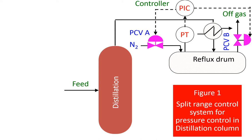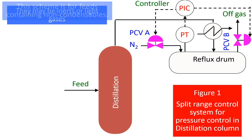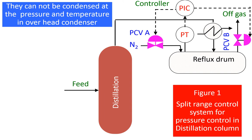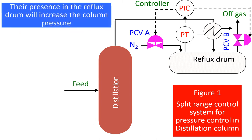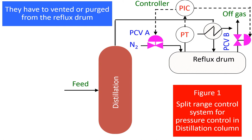The working principle of a split range control scheme in a distillation column is illustrated in this figure. In many instances, the feed to a distillation column consists of light gases which are essentially non-condensables at the operating pressure and temperature of the column. Hence, they accumulate in the reflux drum. Usually, in a distillation column without light gases, cooling water is used to control the pressure. In columns with feed containing inerts and non-condensables, the cooling water flow is not the desired method.